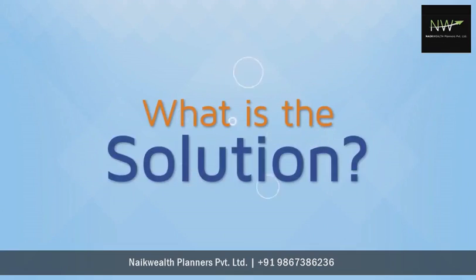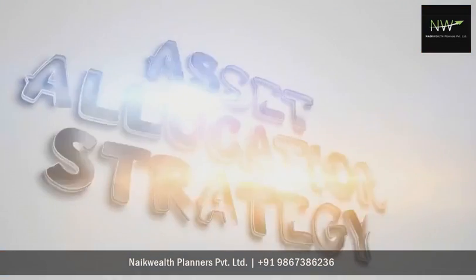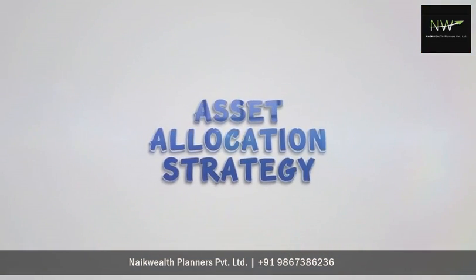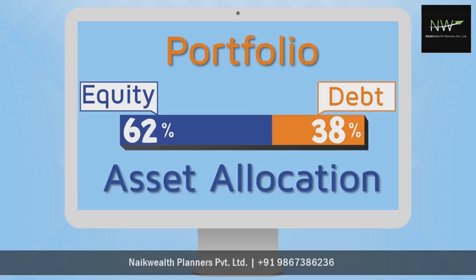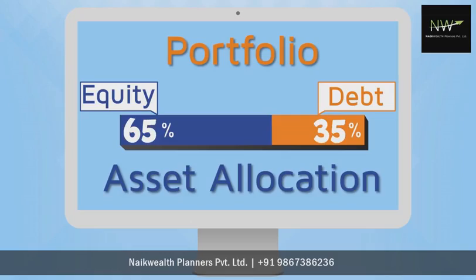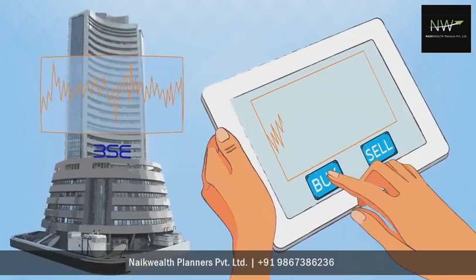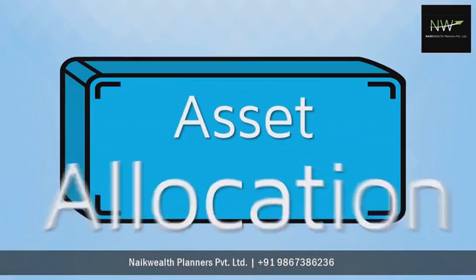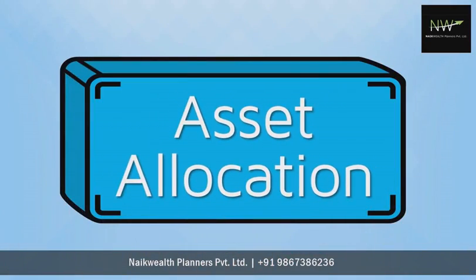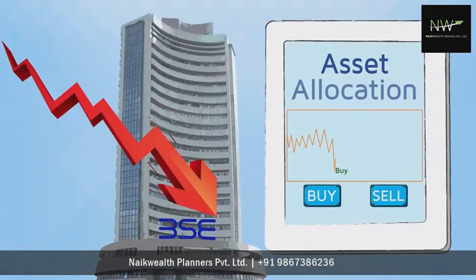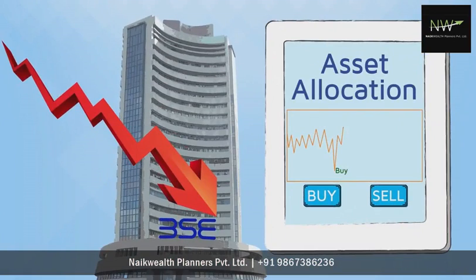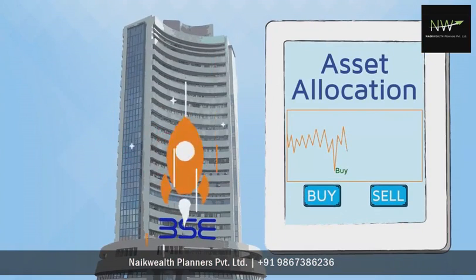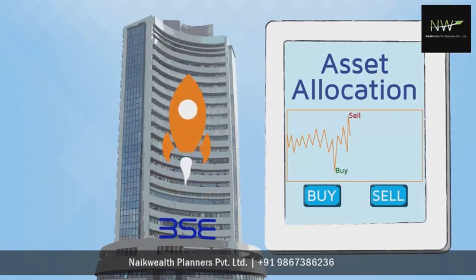What is the solution? Follow asset allocation strategy. Asset allocation means deciding the ideal mix of equity and debt proportion in your portfolio and reviewing it periodically. Asset allocation will automate the process of buying more when markets are low and booking partial profits when markets are high.